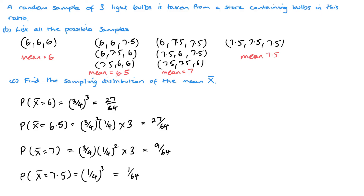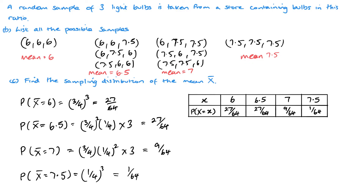We should double-check: 27 + 27 + 9 + 1 = 64, so the probabilities total 64/64 = 1. We then present this as the sampling distribution of the mean in a table with x̄ values 6, 6.5, 7, 7.5 and the corresponding probabilities. Remember, the probabilities should always total one.